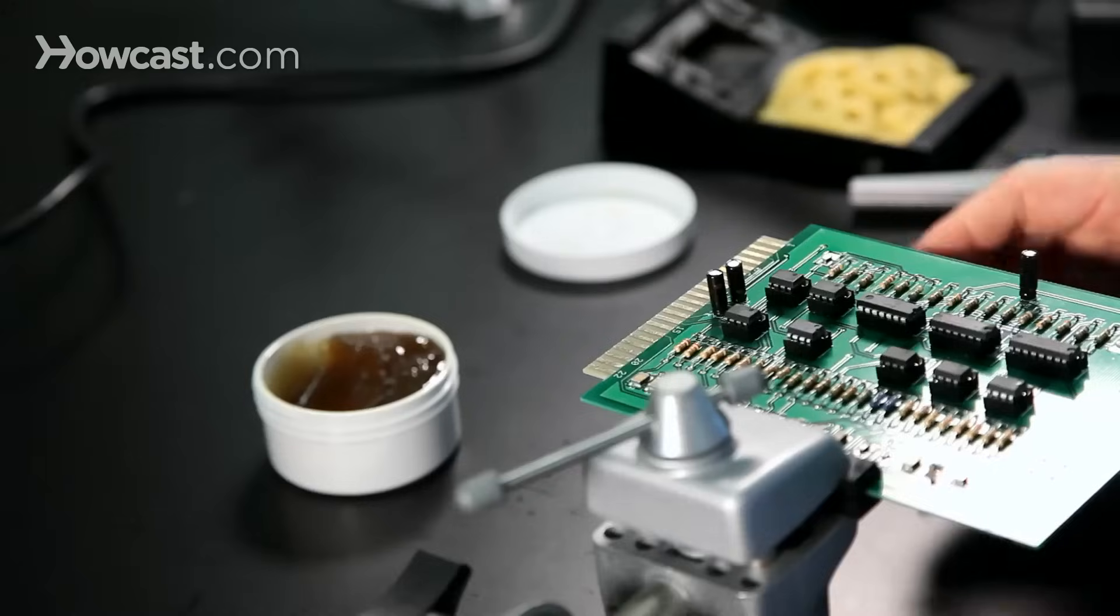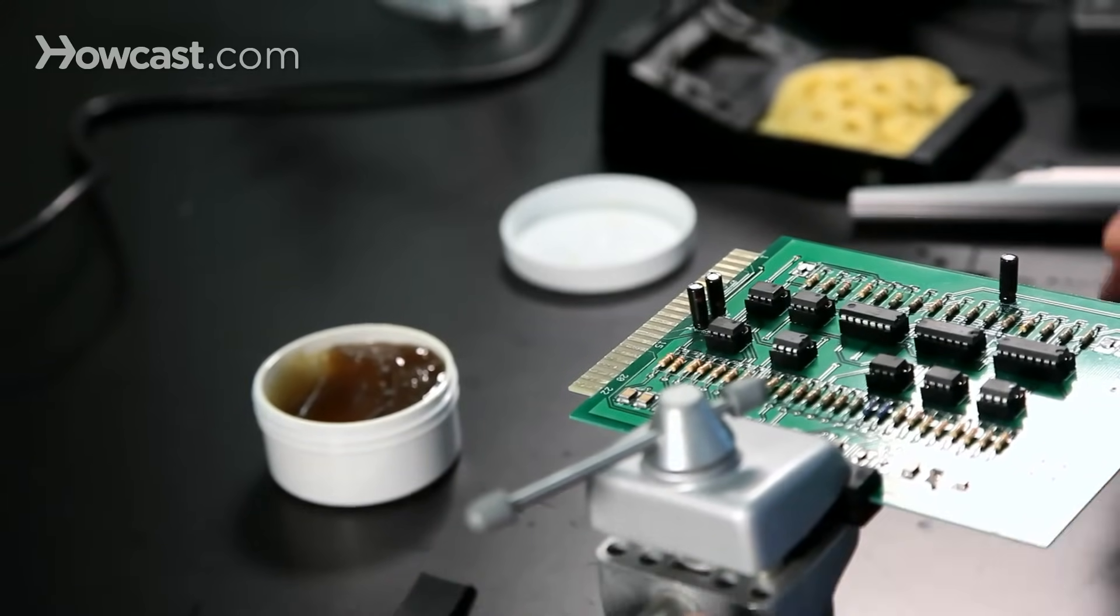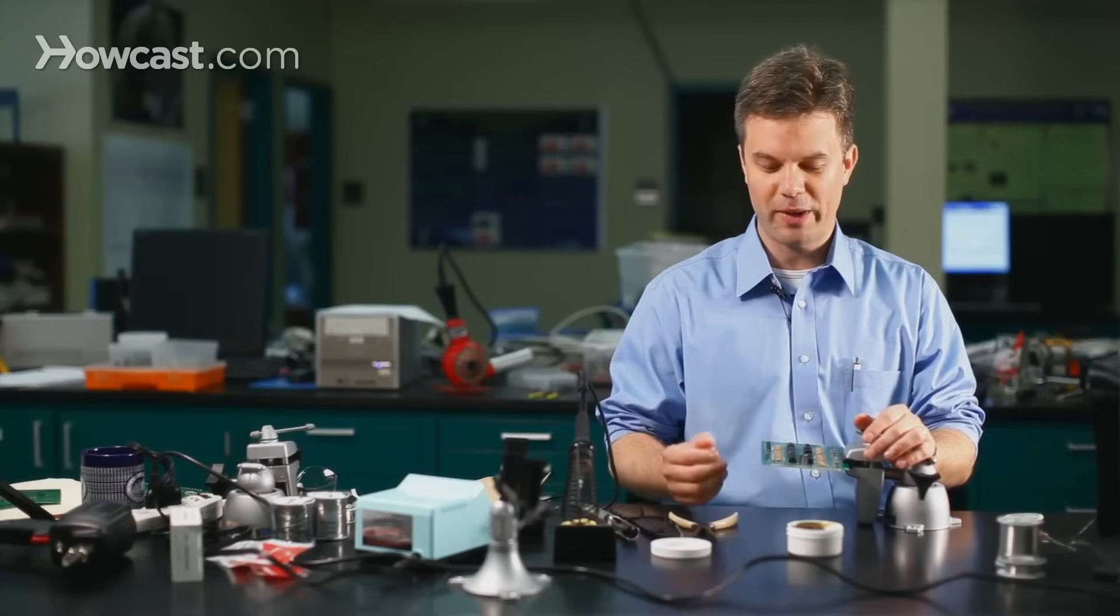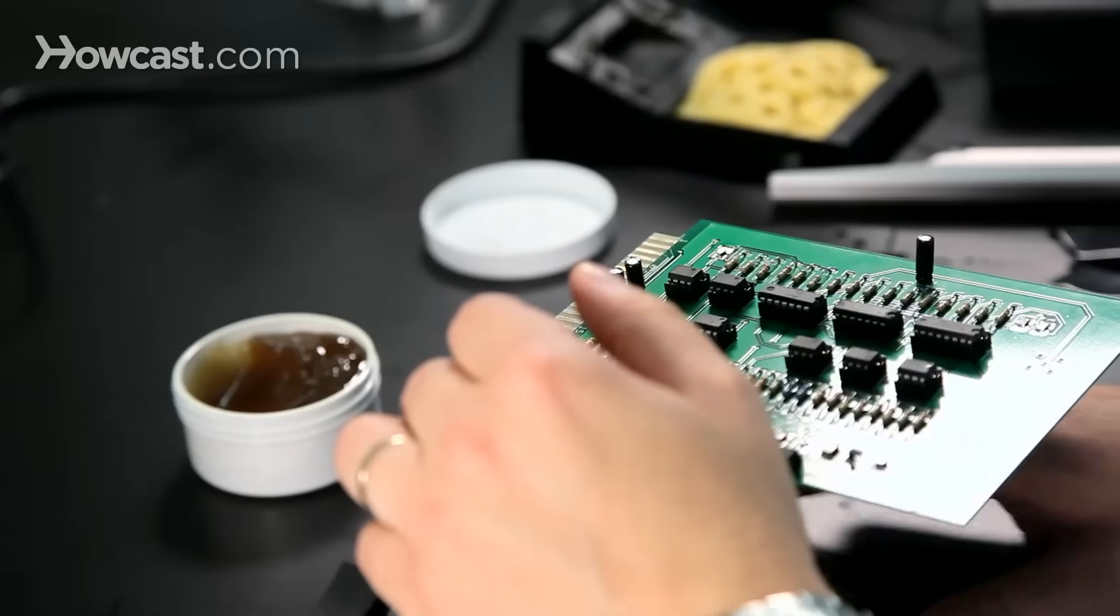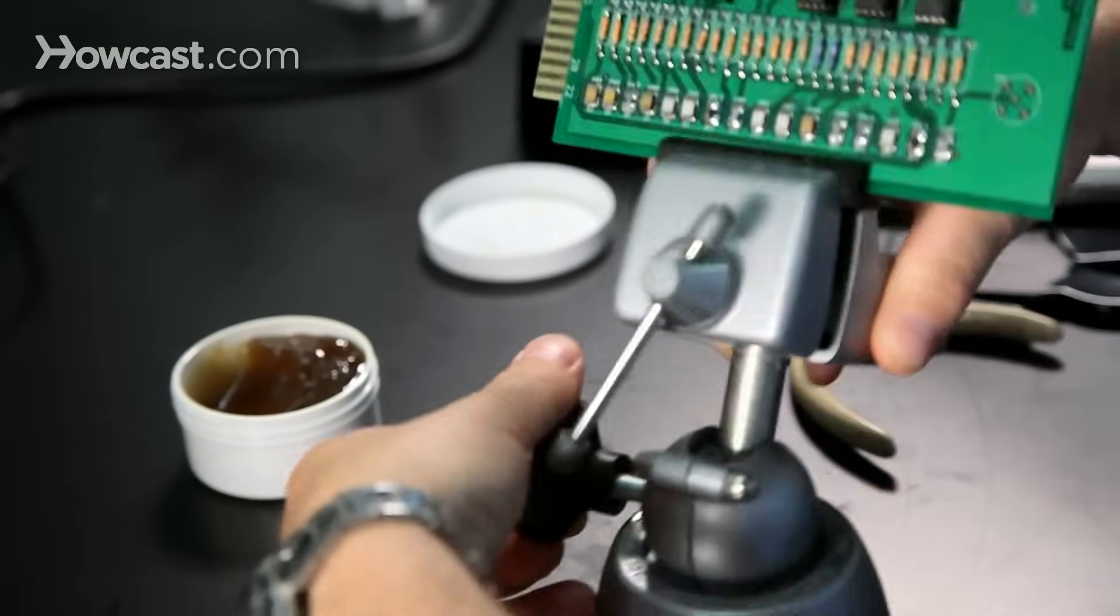Another type of component that's common to work with is the through hole device. Through hole devices have terminals that pass through both sides of the board, and so the solder also passes through that hole as well. To remove the solder from a through hole, we need access to both sides of the board.